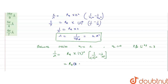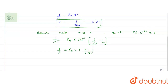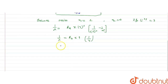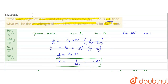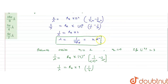So that gives Rh into 9 into 1 upon 4, since 1 upon infinity is 0. We have 1 by lambda equals 9Rh by 4, so lambda equals 4 by 9Rh. Multiplying and dividing by 4, we get lambda equals 16 upon 9 into 1 upon 4Rh. And we already calculated that 1 upon 4Rh equals X angstroms.